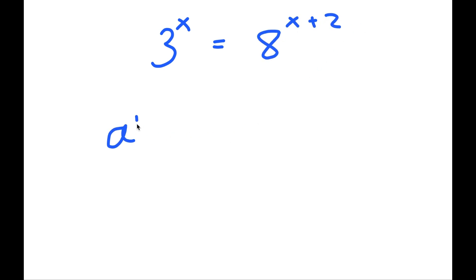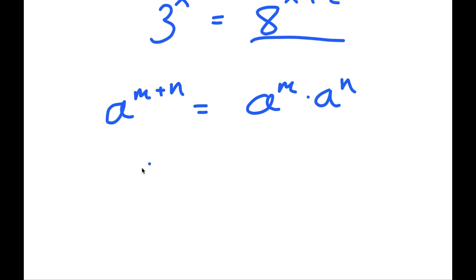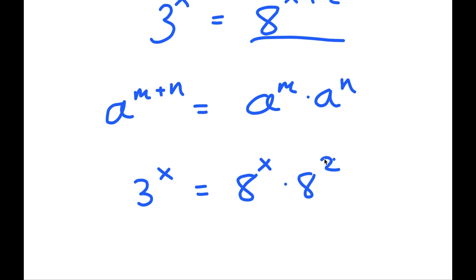To solve this, if I have something in the form a to the power of m plus n, this is equal to a to the power of m times a to the power of n. So a to the power of x plus 2 turns into a to the power of x times a to the power of 2.